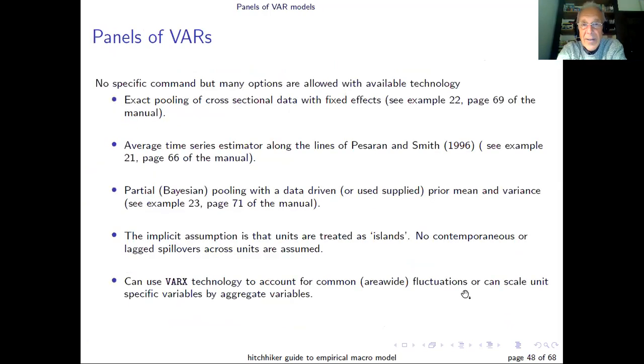Now, in terms of panel VAR, there's nothing specific about this in the toolkit, but there are a number of examples in the manual and in the exercises which show you how you can do this. For example, if you have N units for which you have T observations and G variables, you can do exact pooling of cross-sectional data with fixed effects. You can see the example in the manual. You can do average time series estimator in which you estimate a VAR for each unit separately, and then you average the results. You can average estimates or you can average impulse responses. Or you can do partial Bayesian pooling where the Bayesian prior is data-driven or user supplied.